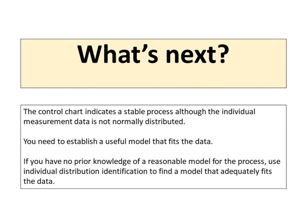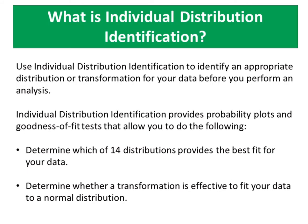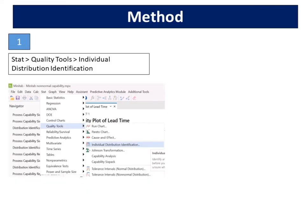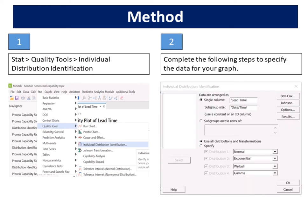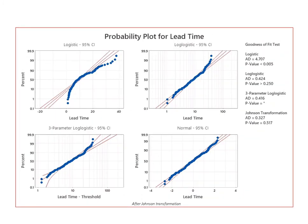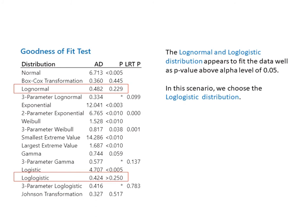You need to establish a useful model that fits the data. If you have no prior knowledge of a reasonable model for the process, use individual distribution identification to find a model that adequately fits the data. Use individual distribution identification to identify an appropriate distribution or transformation for your data before you perform an analysis. It provides probability plots and goodness of fit tests that allow you to determine which of 14 distributions provides the best fit for your data, and determine whether a transformation is effective to fit your data to a normal distribution. Select Stat > Quality Tools > Individual Distribution Identification. Complete the following steps to specify the data for your graph. Minitab will display 14 distributions and 2 transformations. From the goodness of fit test analysis, the log-normal and log-logistic distributions appear to fit the data well, as the p-value is above the alpha level of 0.05.